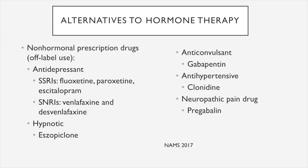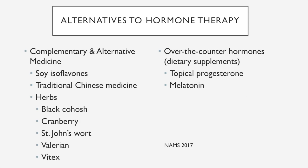These are the alternatives to hormone therapy. This includes non-hormonal prescription drugs such as antidepressants, hypnotic drugs, anticonvulsants, antihypertensives, and drugs for neuropathic pain. Complementary and alternative medicine options include traditional Chinese medicine, herbs, and over-the-counter hormones like topical progesterone or melatonin.